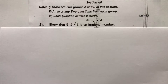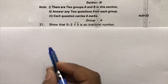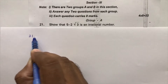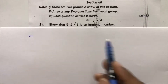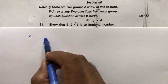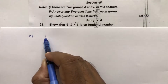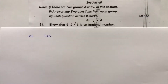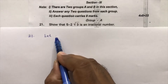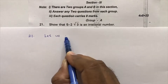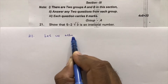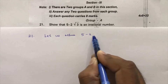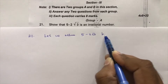Section 3, question number 21: show that 5 minus 2 root 3 is an irrational number. We will solve this problem by contradiction proof. So let us assume 5 minus 2 root 3 is a rational number.